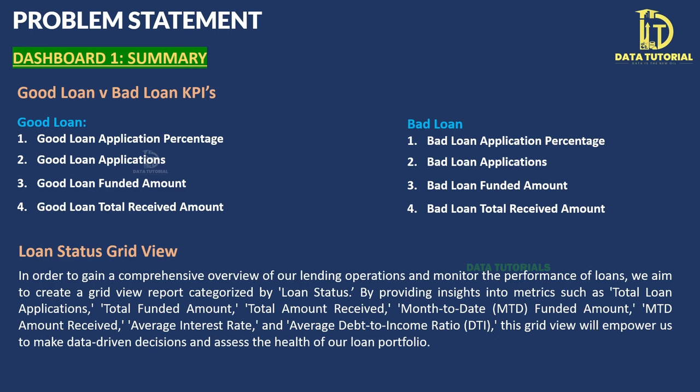The final field is total loan repayment — how much the borrower has paid back. For example, if $4,500 was given, the borrower repaid $4,911 due to the interest rate. Some borrowers also pay lump sums to close the loan early. The bank profits from the interest charged. A terminology document covering each field's meaning and purpose will be provided.